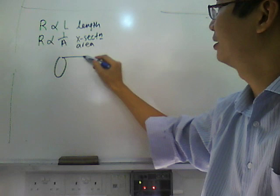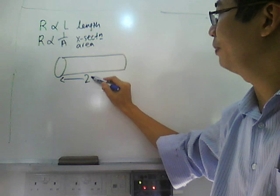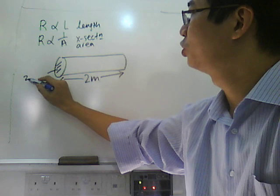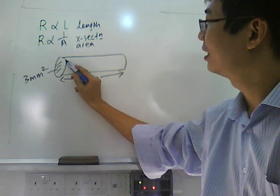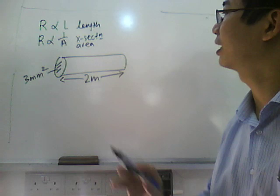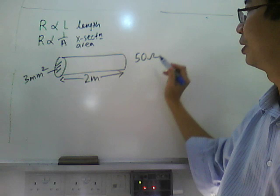First of all, we have a wire. Say the wire is 2 meter long and the cross sectional area is 3 mm squared. What's the meaning of cross sectional area? That means the area of this surface here, you can cut the wire. That's called a cross sectional area.